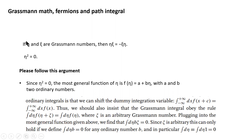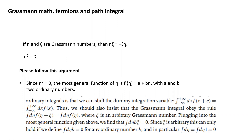We have two numbers called Grassmann numbers, and they obey this fundamental anti-symmetric property. If it were the same number, the square of the number equals zero. This follows directly from the definition. Since η² = 0, any general function of η can be Taylor expanded: all higher-order terms above η² become zero. So this is the most general function you can have of eta.